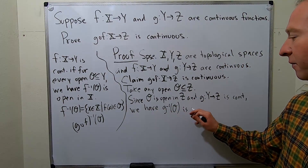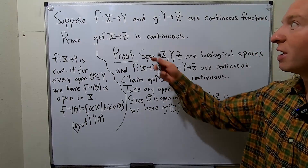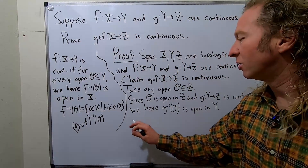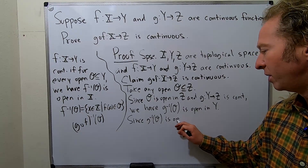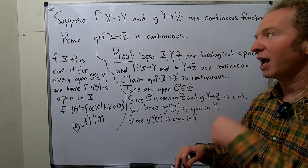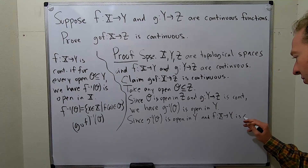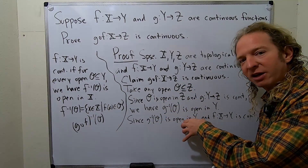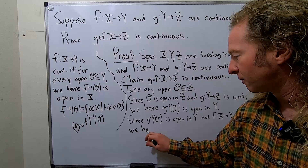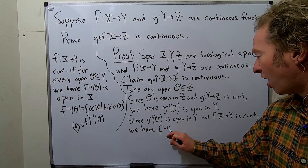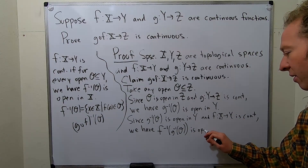So we have that g⁻¹(O) is open in y — that's the codomain of f. So now we're going to use continuity of f. Since g⁻¹(O) is open in y, and f from x to y is continuous, using continuity of f we have that the inverse image of g⁻¹(O) under f, that is f⁻¹(g⁻¹(O)), is open in x.